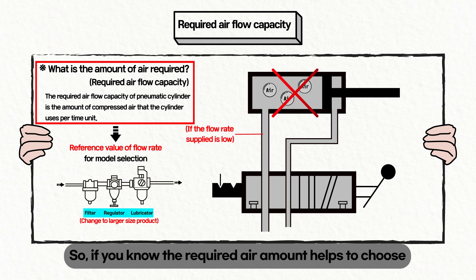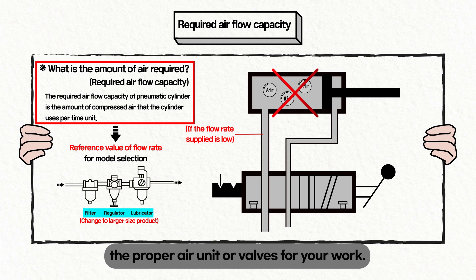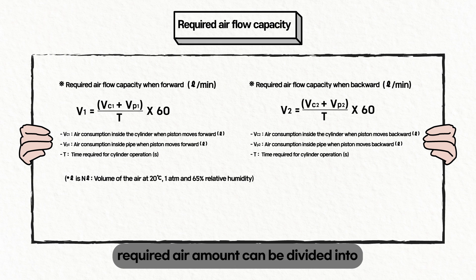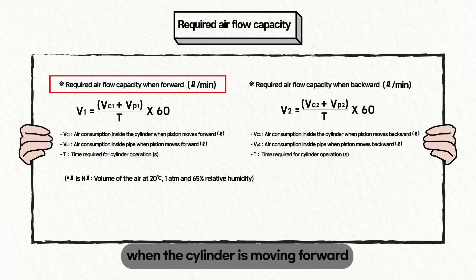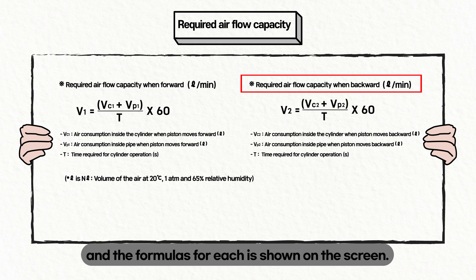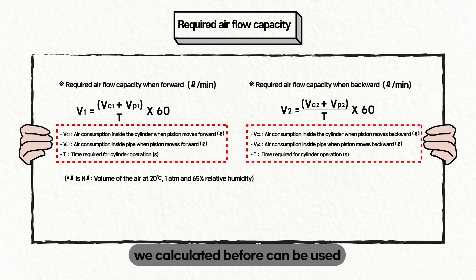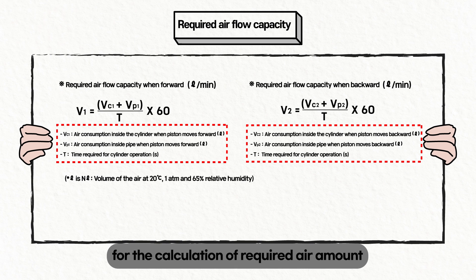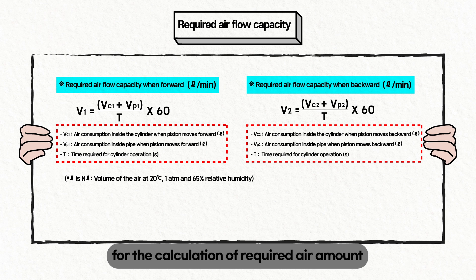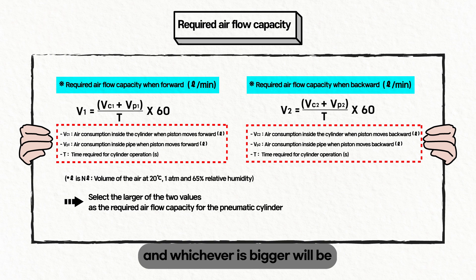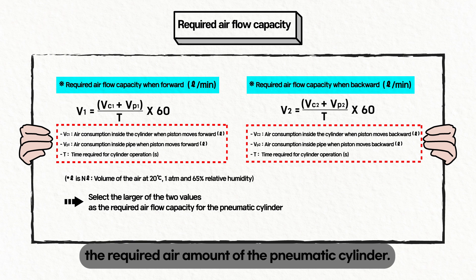Knowing the required air amount helps you choose the proper air unit or valves for your application. The double-acting cylinder's required air amount can be divided into when the cylinder is moving forward and when moving backward, and the formulas for each are shown on the screen. The air consumption values calculated earlier can be used in the required air amount formula. Whichever result is bigger will be the required air amount of the pneumatic cylinder.